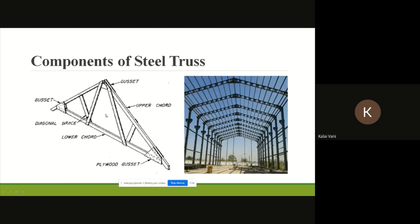Even as per your design, if you need additional bracing at a location, you can very well proceed with that design. There are no hard and fast rules that only a specific type of truss should be given. Wherever you have additional tension, you need to enhance the strength of your truss, and you can provide more bracings as needed.